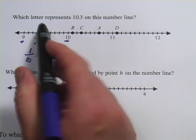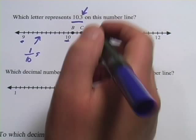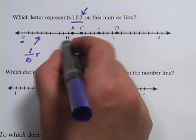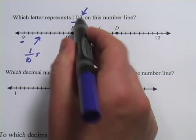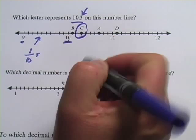Now, it says, which letter represents 10.3? Well, this is the tenths space, and there's three of them. So I'm going to find 10, which is right here, and then I need three more tenths, and that's three of these little hash marks. So 1, 2, 3 brings me to C.